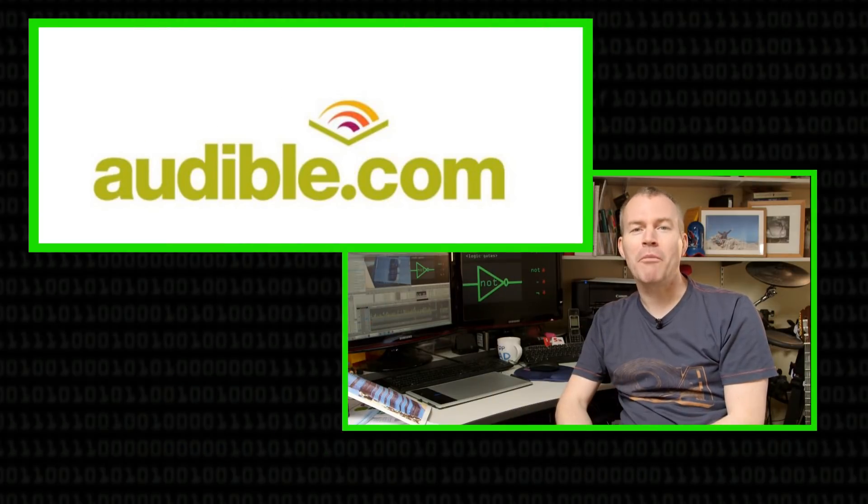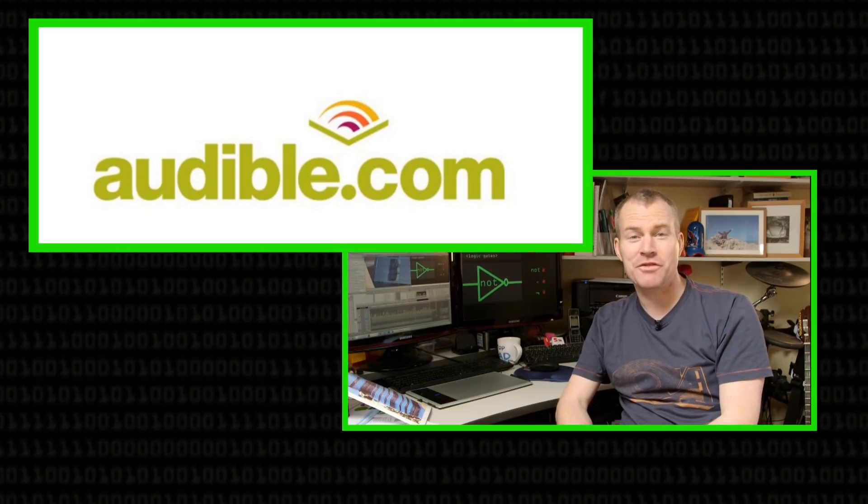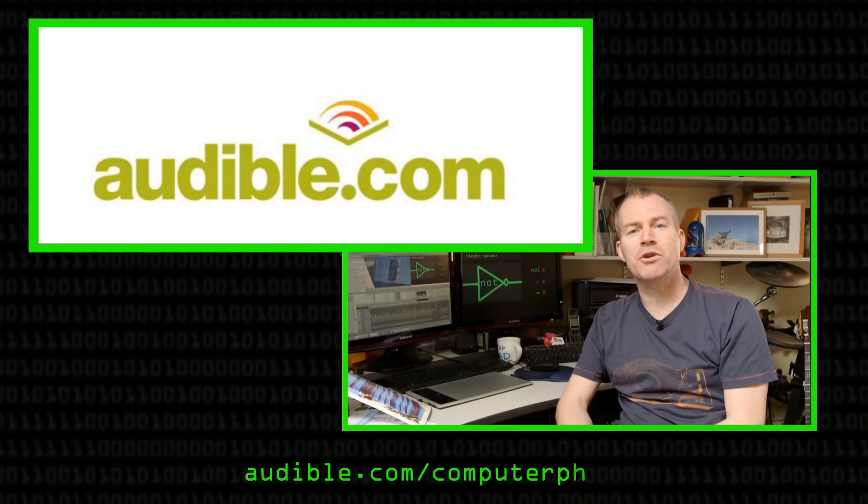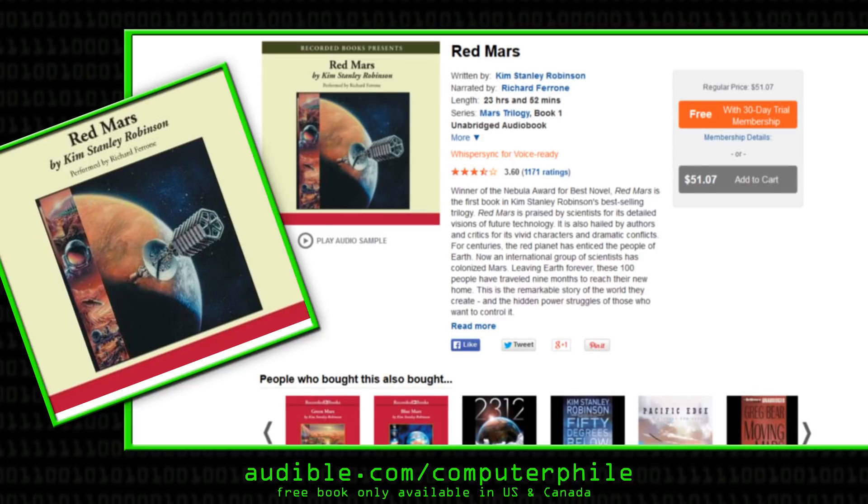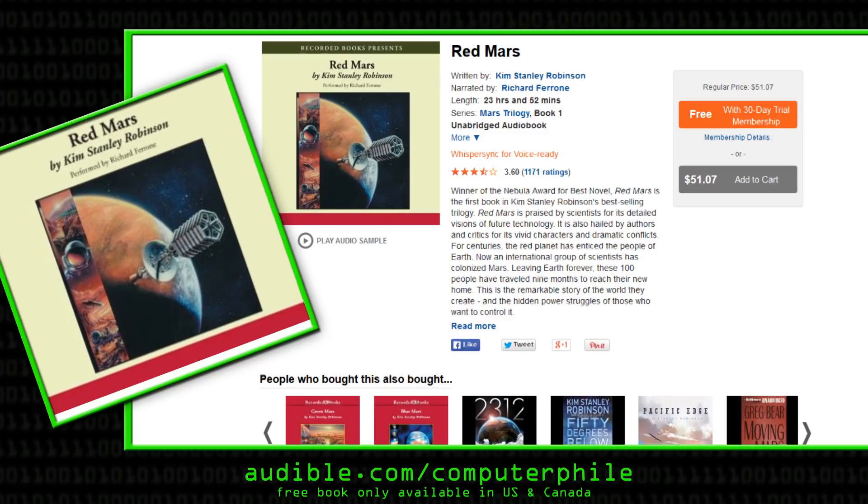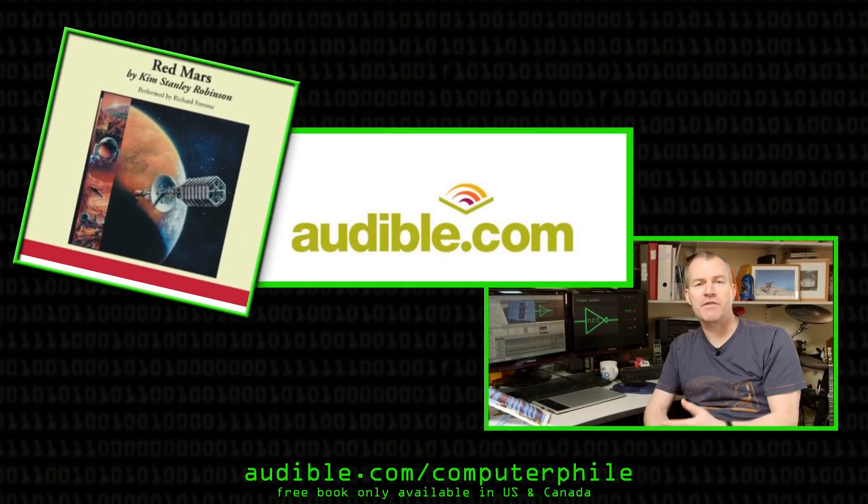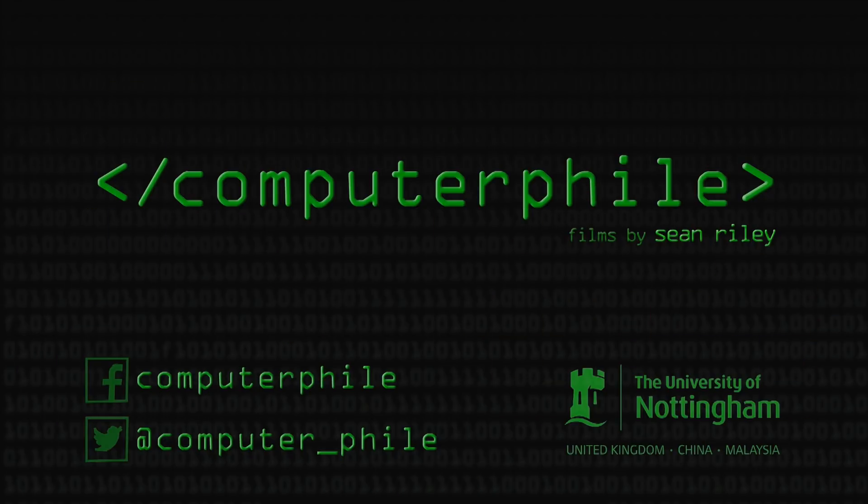We'd like to thank Audible.com for sponsoring this Computerphile video. They've got over 100,000 titles to choose from. And if you'd like to try one out for free, go over to Audible.com slash Computerphile. Today I'd like to recommend Red Mars by Kim Stanley Robinson. There's been a lot of hype recently about visiting and colonising Mars, and Kim Stanley Robinson really captures what this might be like to do. It feels very realistic, not the sort of utopian vision you get in some science fiction. So check out Red Mars. Go over to Audible.com slash Computerphile. Try it out for free. And thanks once again to them for sponsoring this Computerphile video.